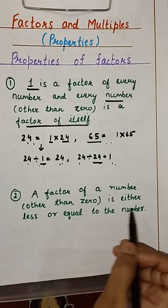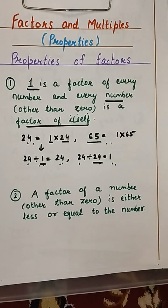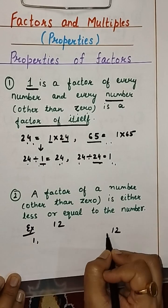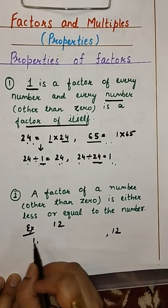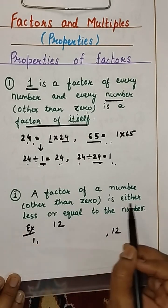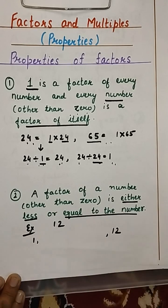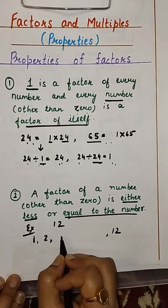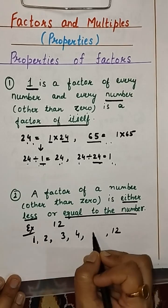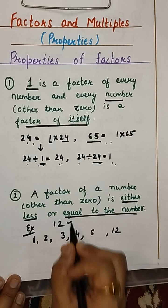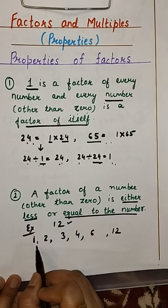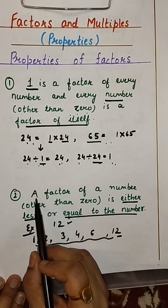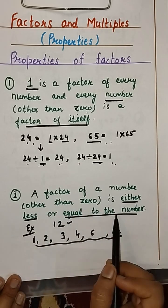A factor of a number other than 0 is either less than or equal to the number. For example, factors of 12: from property 1 we know 1 and 12 are factors. The remaining factors — 2, 3, 4, and 6 — all lie between 1 and 12. So they are all less than 12, and 12 itself is equal to 12. This is the second property.